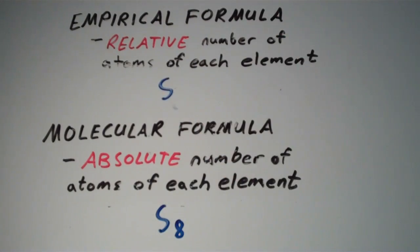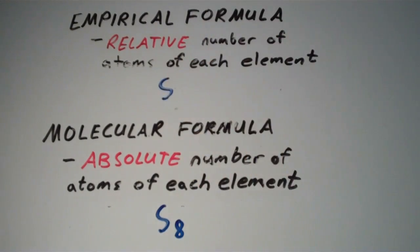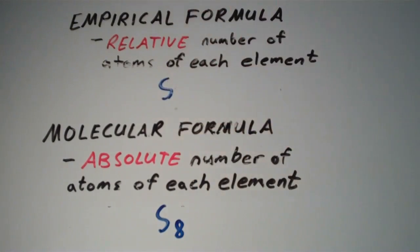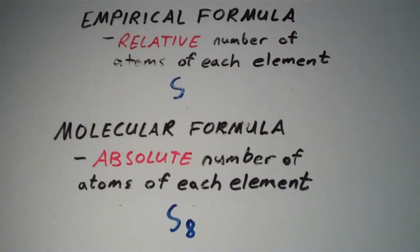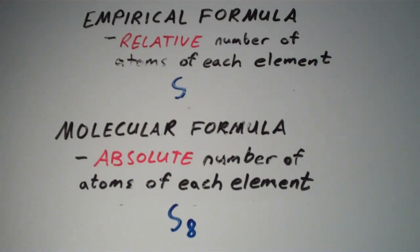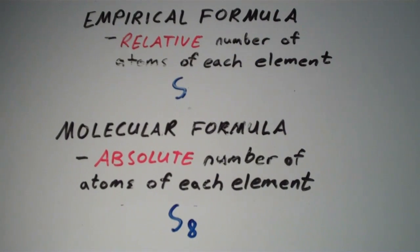Since there are no other atoms and the empirical formula shows the relative numbers of atoms, anytime we have an element by itself it doesn't matter what the subscript is — the empirical formula is just going to be one of that element.